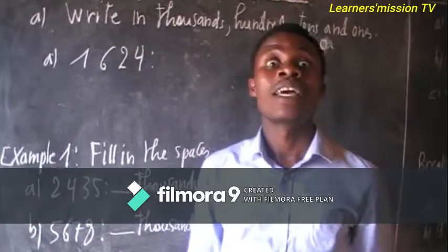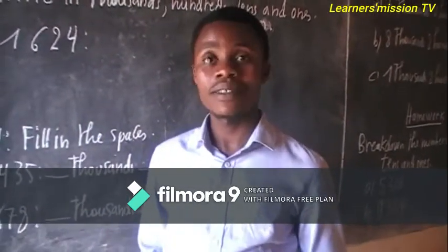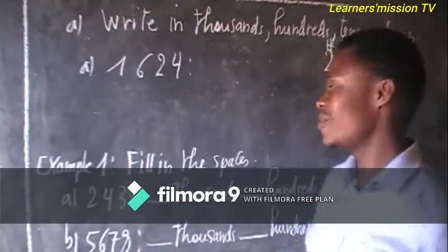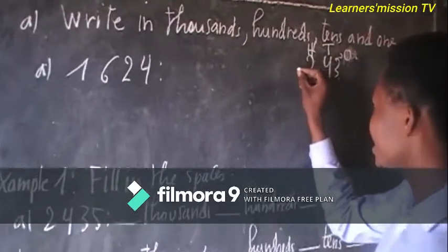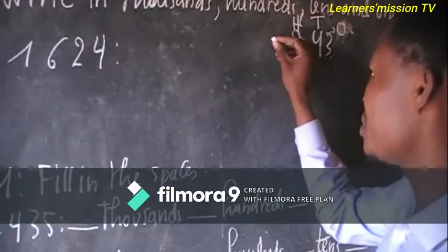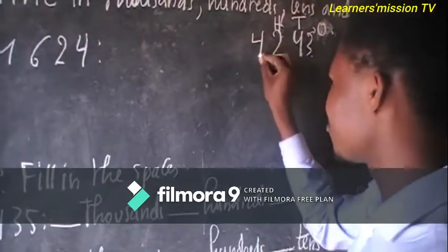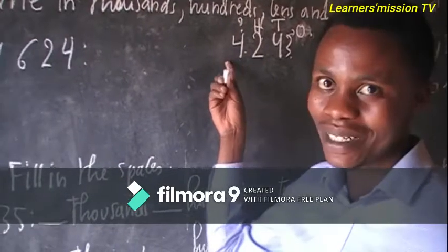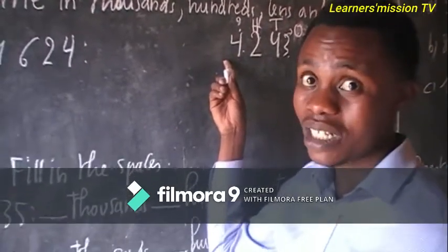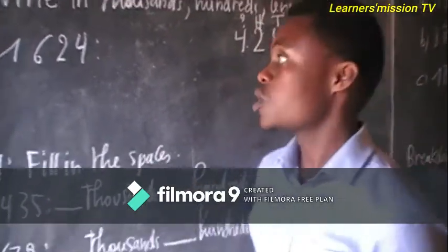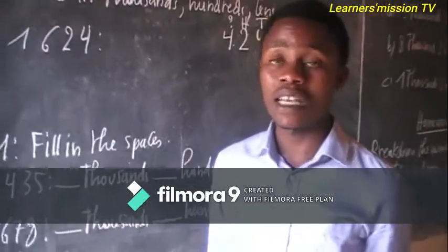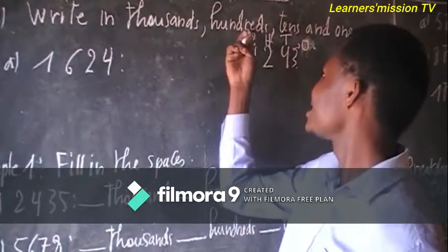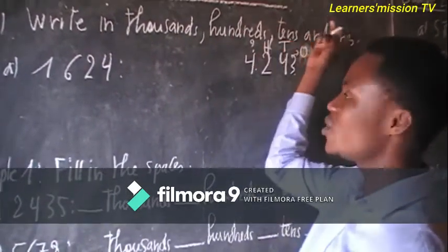So in Primary 3 you are going to learn another one. For example, the next number here is another number — for example, it is 4. What is the place value of this number? That is what you are going to learn. So here we are having an example right in thousands, hundreds, tens, and ones.